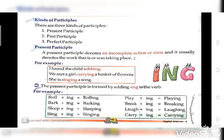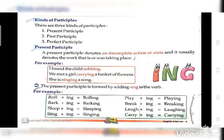Kinds of participle — as told earlier, there are three kinds: present participle, past participle, and perfect participle. The first is present participle. A present participle denotes an incomplete action or state, and it usually denotes the work that is or was taking place. यह ऐसे actions को reflect करते हैं जो actions complete नहीं हुए हैं. Example: 'I found the child sobbing.' 'We met a girl carrying a basket of flowers.' 'She is singing a song.' The present participle is formed by adding ing to the verb.